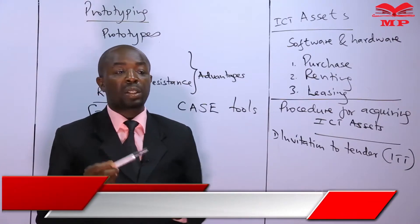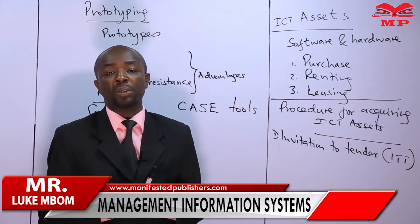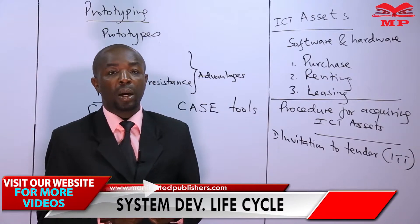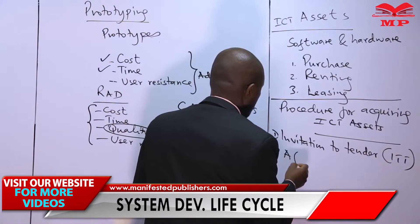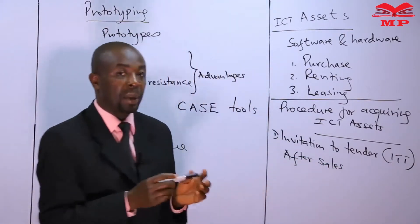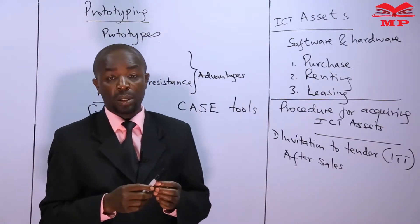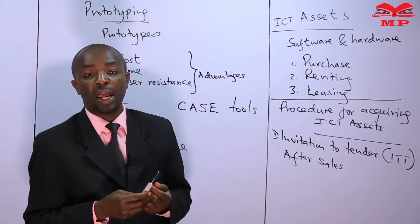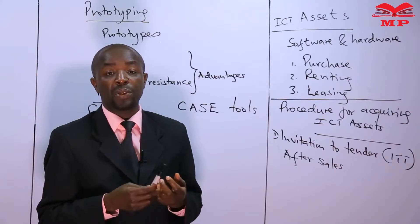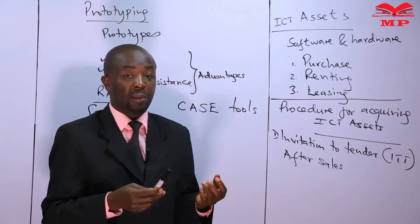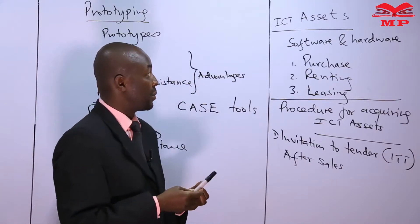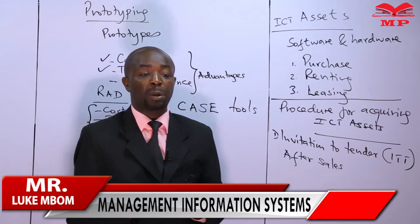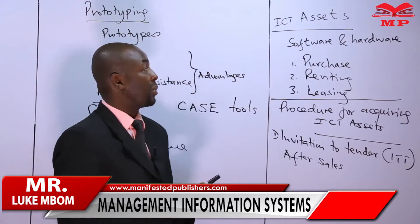It should define the financial stability of the supplier based on their assets, which will convince the acquiring organization that in case the assets fail, the supplier can compensate. It could also talk about after-sales services — whether the supplier will maintain the hardware and software if they fail, at what cost, and whether the supplier will provide basic training to expected users. It is also very important for suppliers to give the quoted price for the hardware and software.